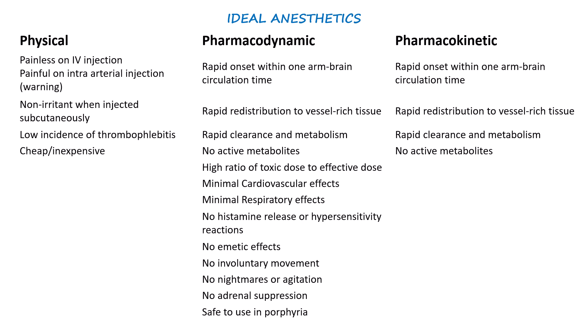There are many properties that an ideal anesthetic should possess, and no single agent possesses all these ideal characteristics. These properties can be grouped into physical, pharmacokinetic, and pharmacodynamic properties. The table here outlines the characteristics that an ideal anesthetic must possess — you can go through it as it is self-explanatory. We'll revisit these properties when we learn about individual induction drugs.